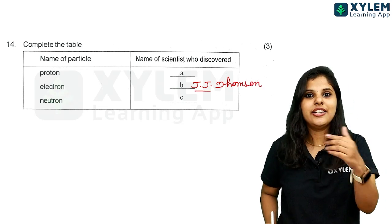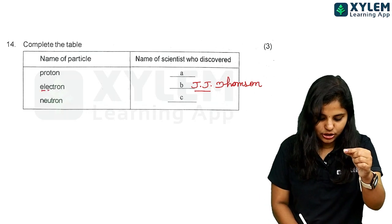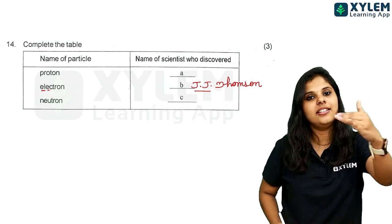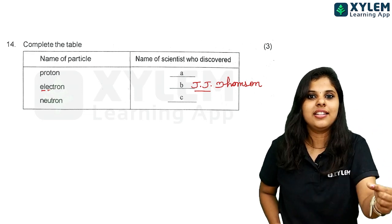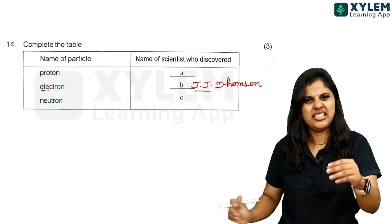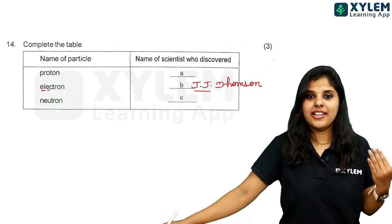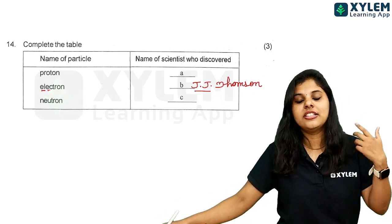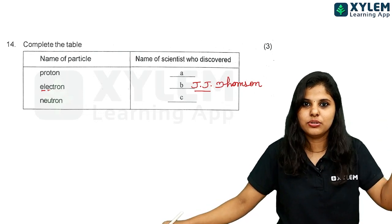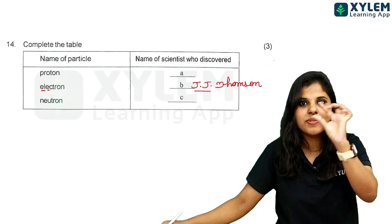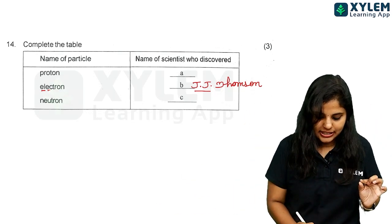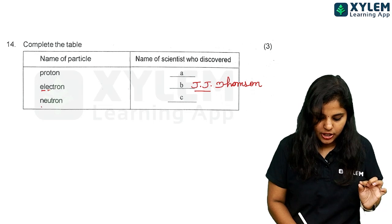J.J. Thomson — the J is repeated, just like the electron is repeated. That means the electron is discovered by J.J. Thomson. And now let's talk about Neutron.